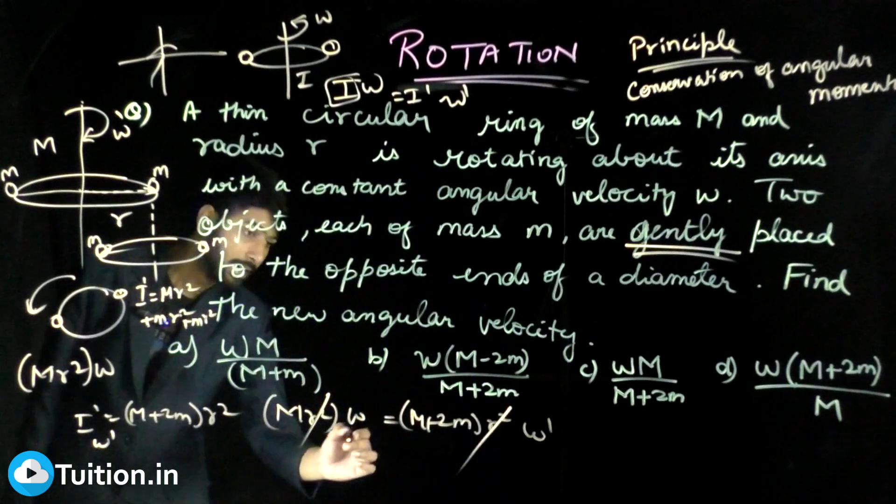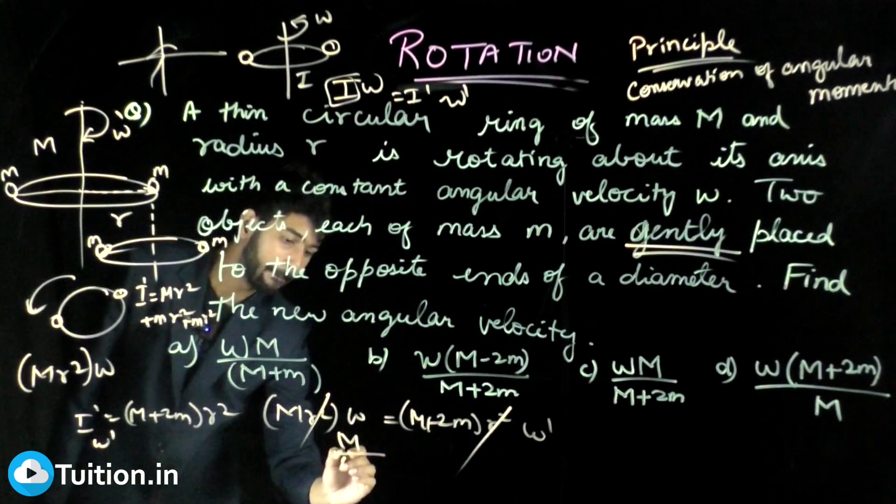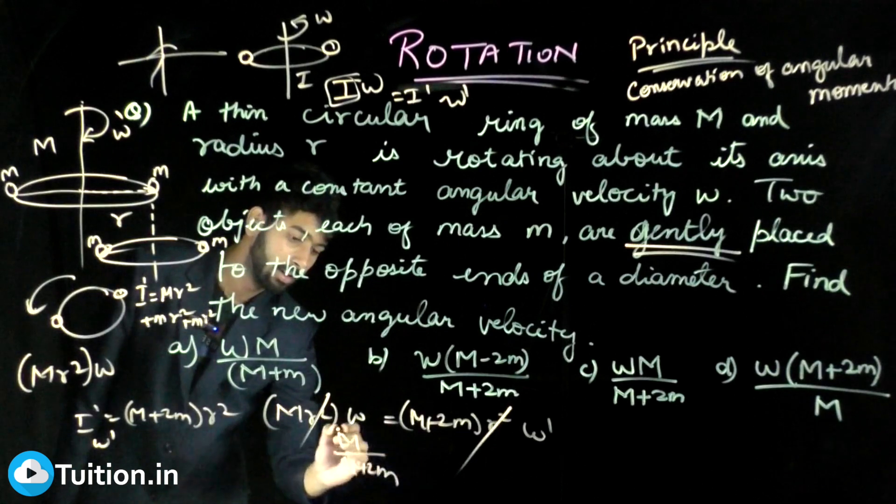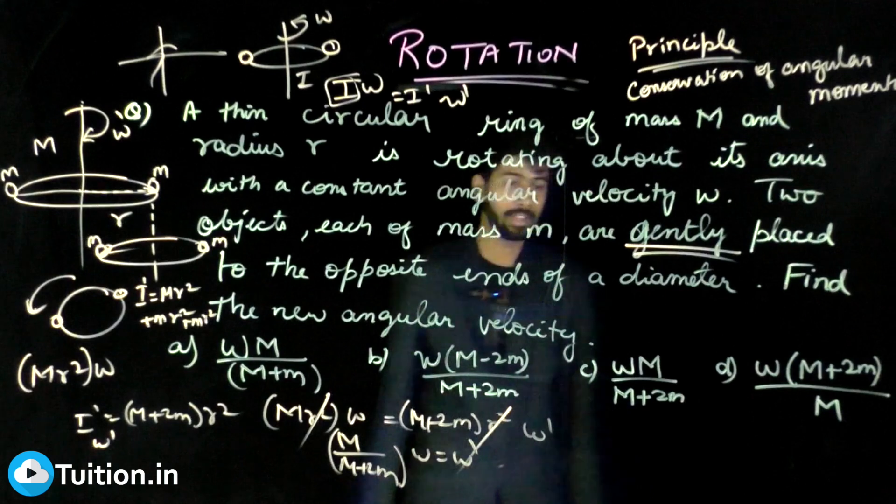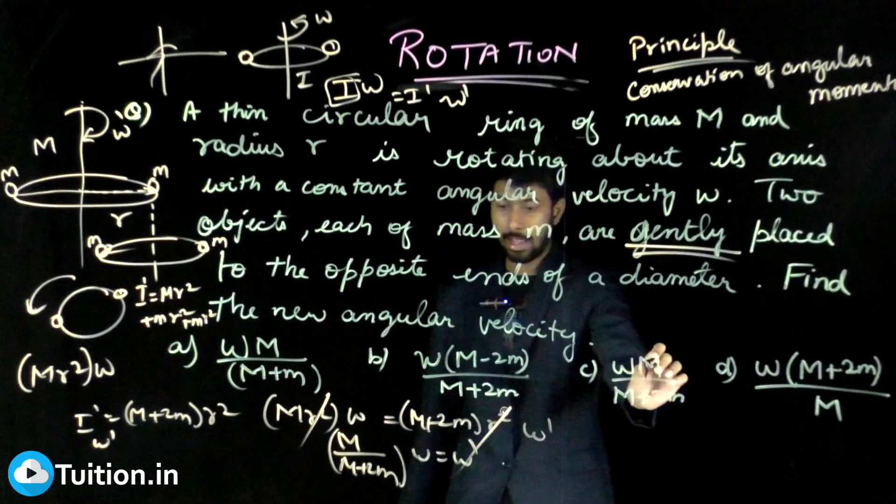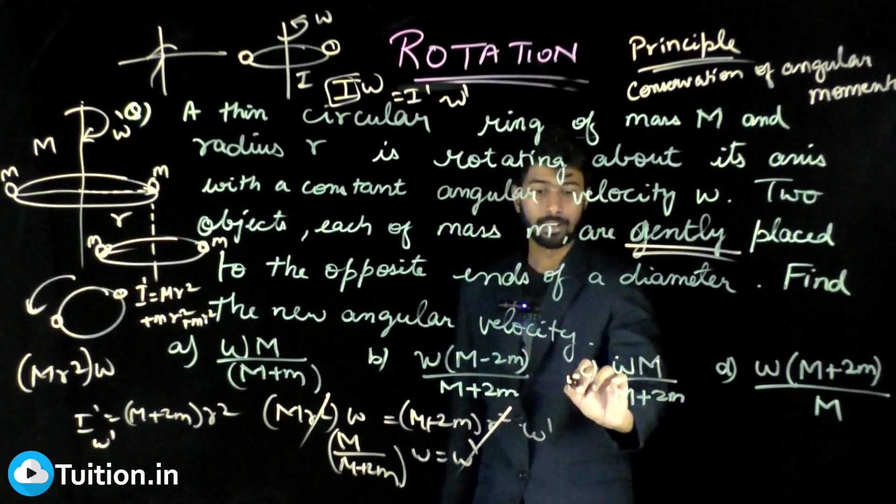r² gets cancelled and simply it's nothing but m by m plus 2m into omega, which is your omega dash. m by m plus 2m into omega. m by M+2m times omega, and yeah, so this is the answer.